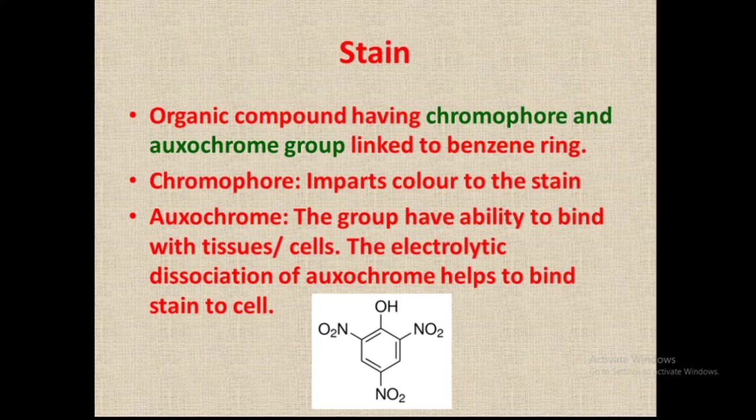Benzene is a colorless organic solvent, and it imparts the organic characteristics to the stain. The chromophore and oxochrome groups have specific functions. The color of a particular stain — for example, crystal violet stain has a violet color — is due to the chromophore group. So chromophore imparts the color to the stain.